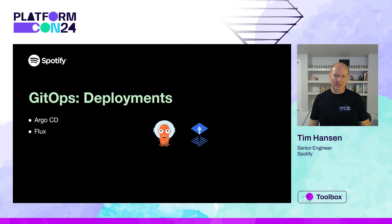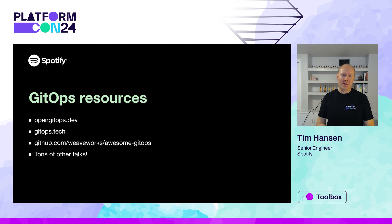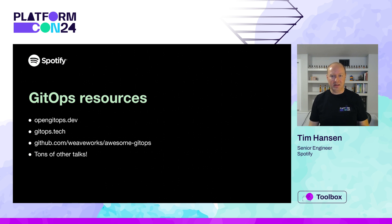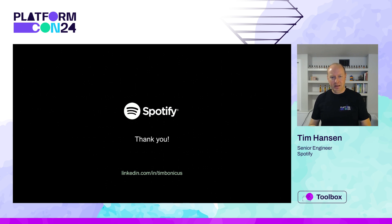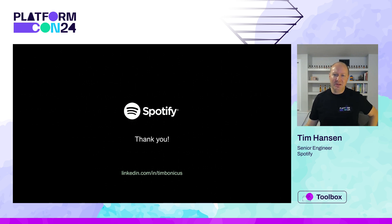For application deployment, ArgoCD and Flux are the two dominant tools you'll primarily hear about — both are focused on Kubernetes deployments. Beyond those tools, there are great GitOps resources out there. OpenGitOps.dev is from the CNCF GitOps working group. GitOps.tech is a site from Weaveworks, who pioneered this space, and they also have an awesome list of GitOps tools including many I didn't cover here. I hope you can see some of the power of GitOps and have some inspiration to start using it at your company. Thank you, everyone — please feel free to reach out to me if you have any questions or need advice.